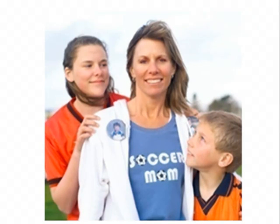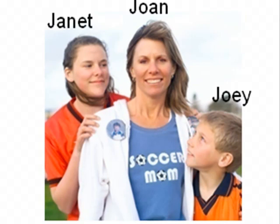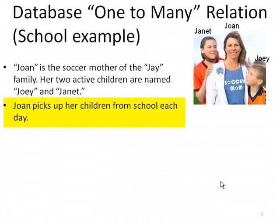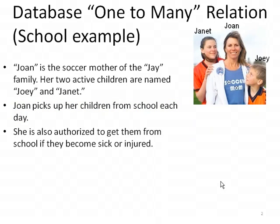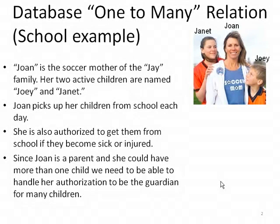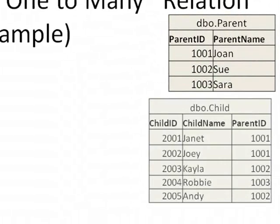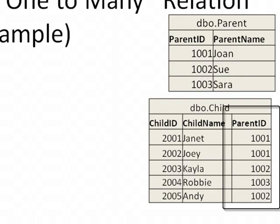Let's use a soccer mom example. This is Joan. Joan is the soccer mother of the Jay family. Her two active children are named Joey and Janet. Joan picks up her children from school each day. She's also authorized to get them if they become sick or injured. Since Joan is a parent and she could have more than one child, we need to be able to handle her authorization to be the guardian for multiple children. So here's a common proposed solution: we put the parent ID in the child table pointing to the parent.